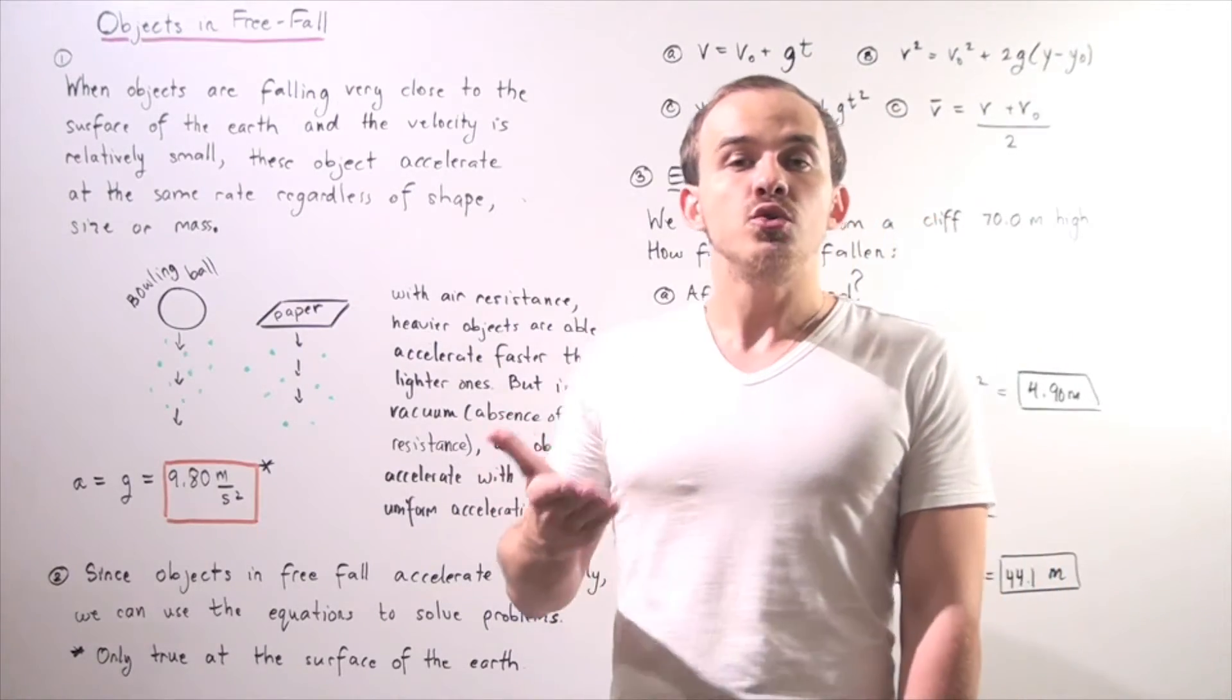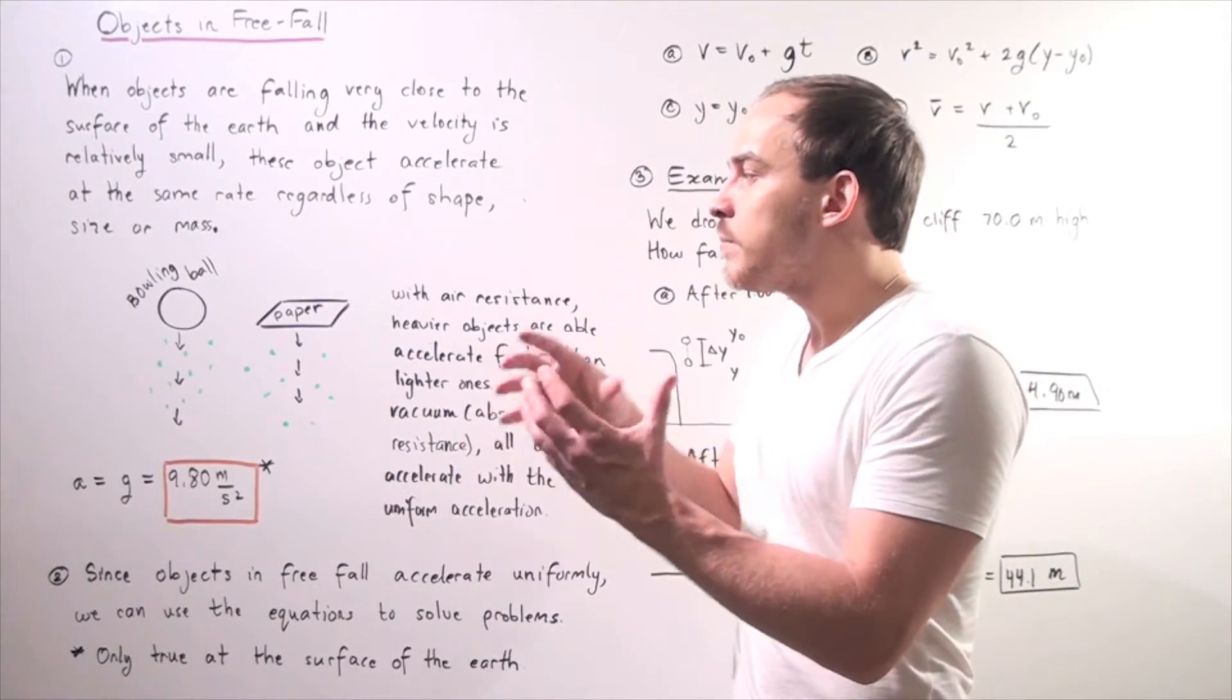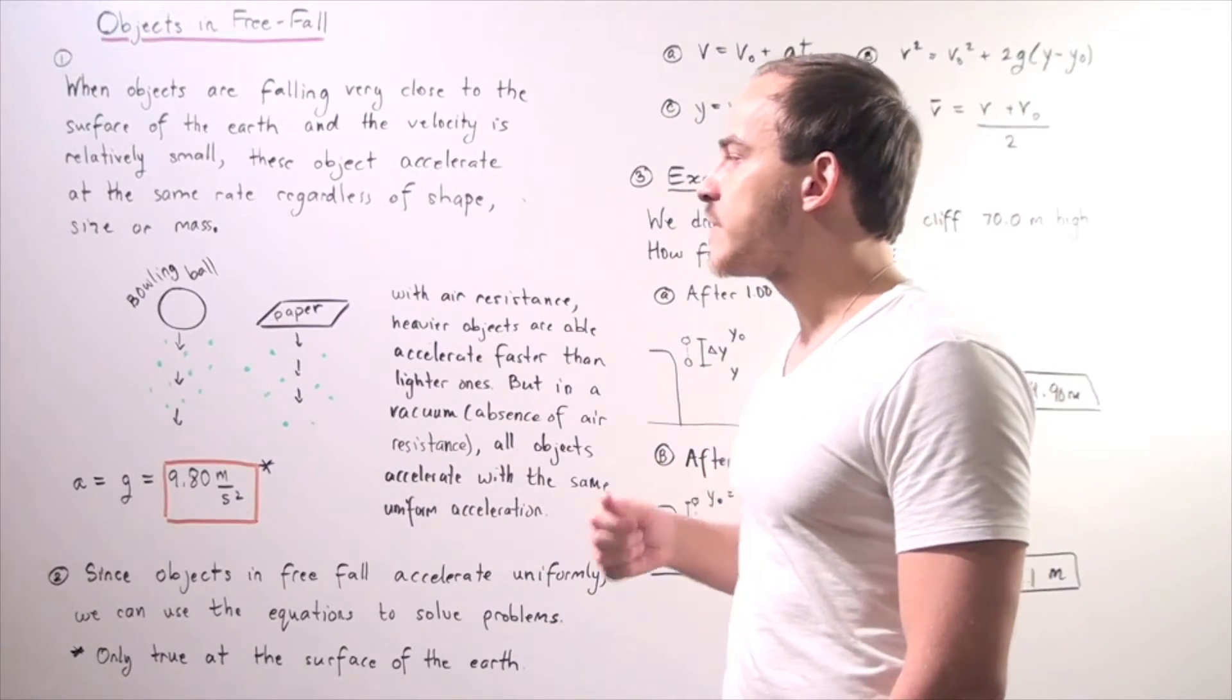For example, CO2, O2, N2, and all these molecules together play a role to create resistance for our falling objects.